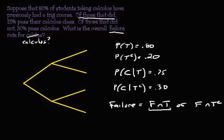Alright, so this is, you have to just be in one of these groups and that you'll count in the failure rate. So what we want, so we want, what is the probability of, well, failure and trig or failure and not trig. Alright, so this is what we want.